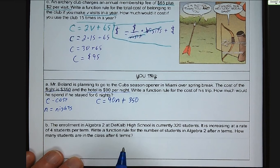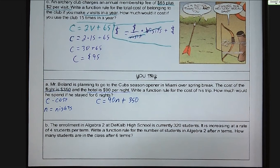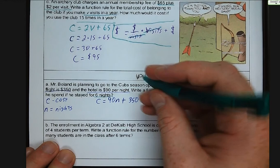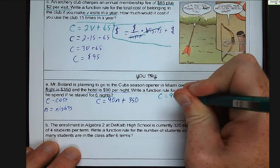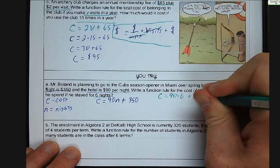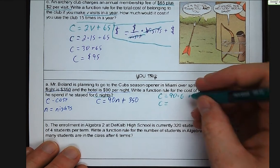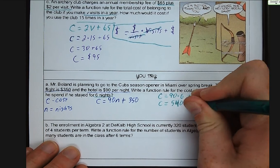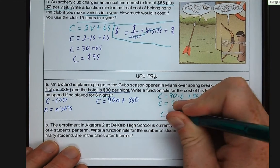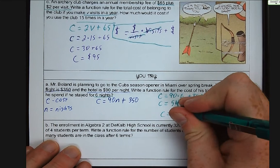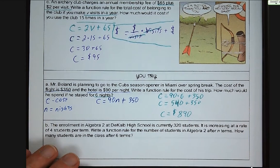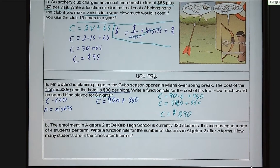So the cost is equal to $90 per night times the number of nights plus my fixed cost of my flight. So no matter how many nights I spend, it's going to cost me $350. So now I want to substitute in my decision of six nights. So we have C equals 90 times 6 plus $350. 90 times 6 is going to be $540 plus $350. So the cost of my trip is going to be $890. Make sure you have your units there.